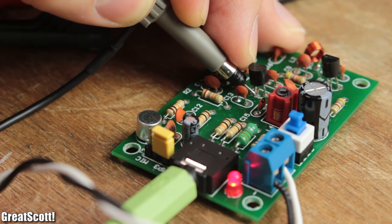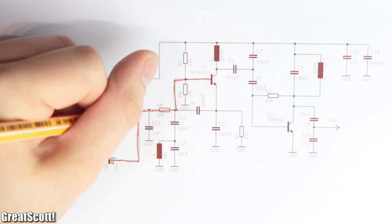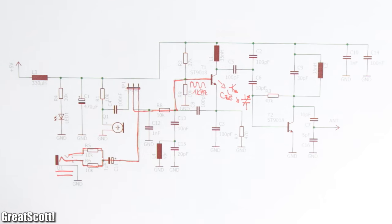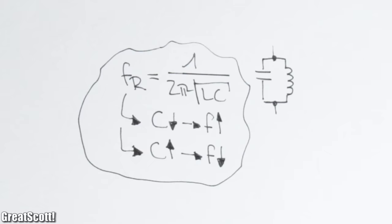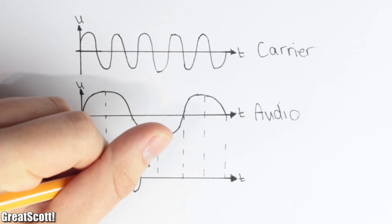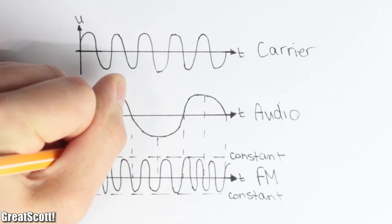By applying an alternating voltage onto the base of the transistor, like our audio signal, the base collector capacitance changes, which in consequence changes the resonance frequency. And thus, our oscillating signal now changes its frequency a bit proportional to the amplitude of the music.